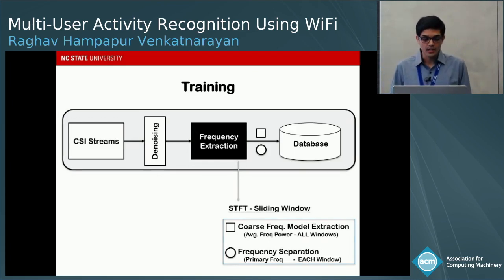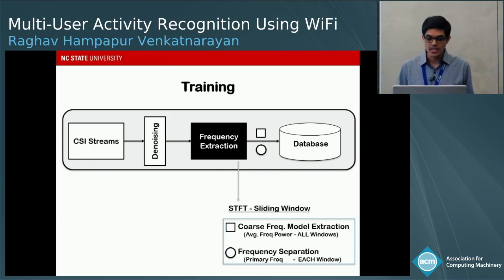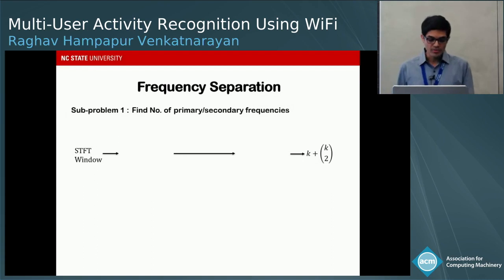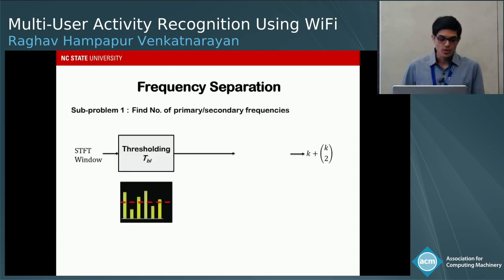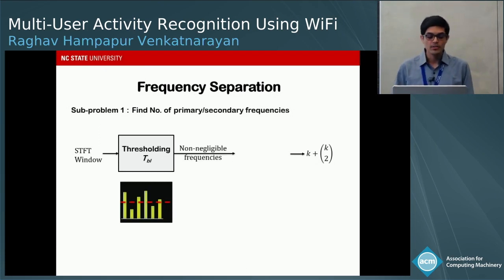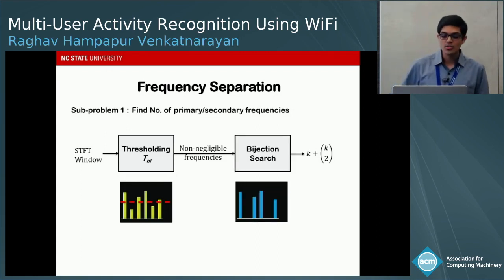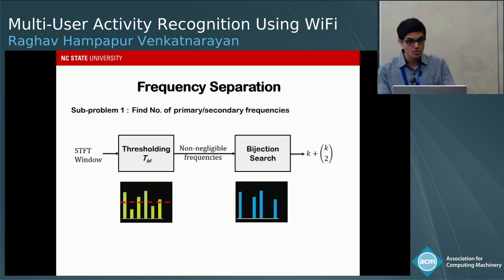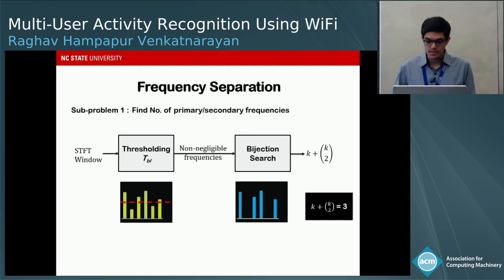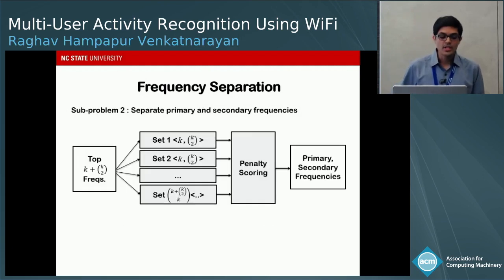The core of the training phase is frequency extraction. The coarse frequency extraction is straightforward; the key contribution is the frequency separation method. For frequency separation, we divide the problem into two sub-problems. The first is: given an STFT window, how do we find the number of primary or secondary frequencies? We use a dynamic threshold to reject frequencies below a certain magnitude, then perform a bijection search to get the count as K + K-choose-2, where K is the number of primary frequencies.